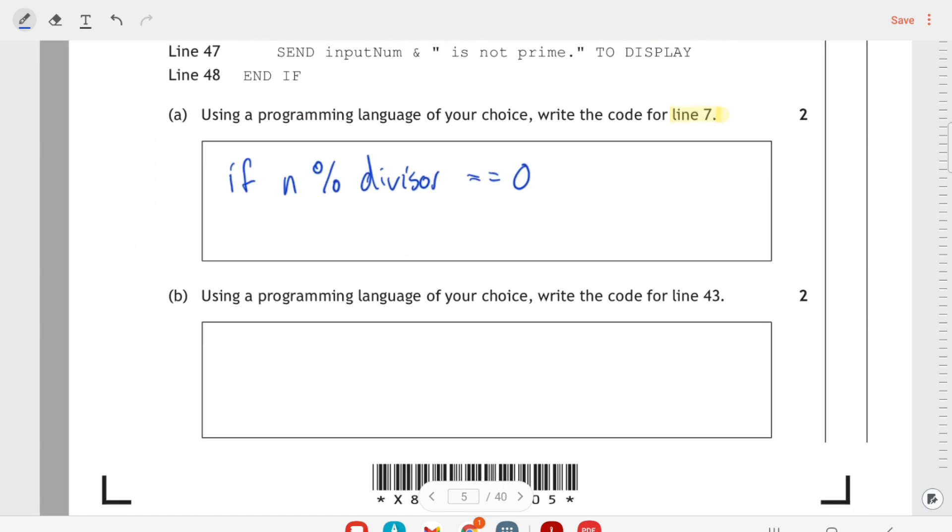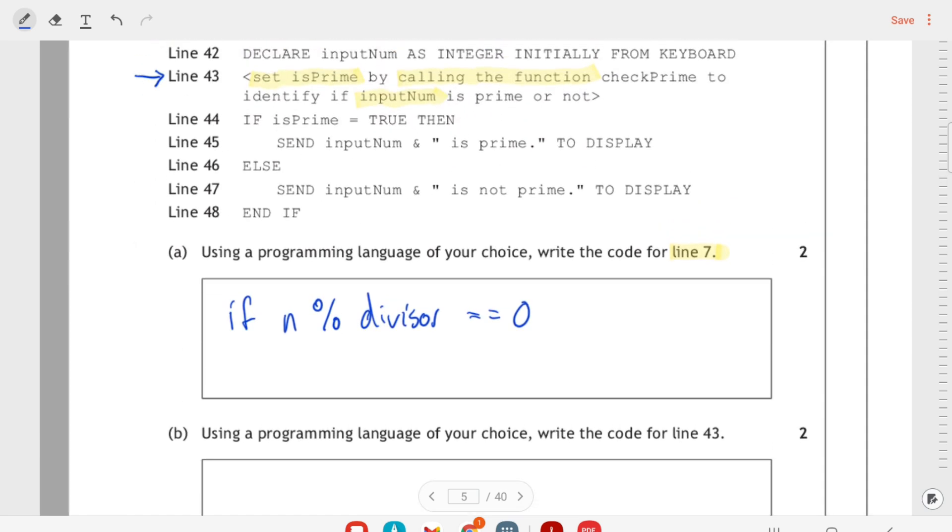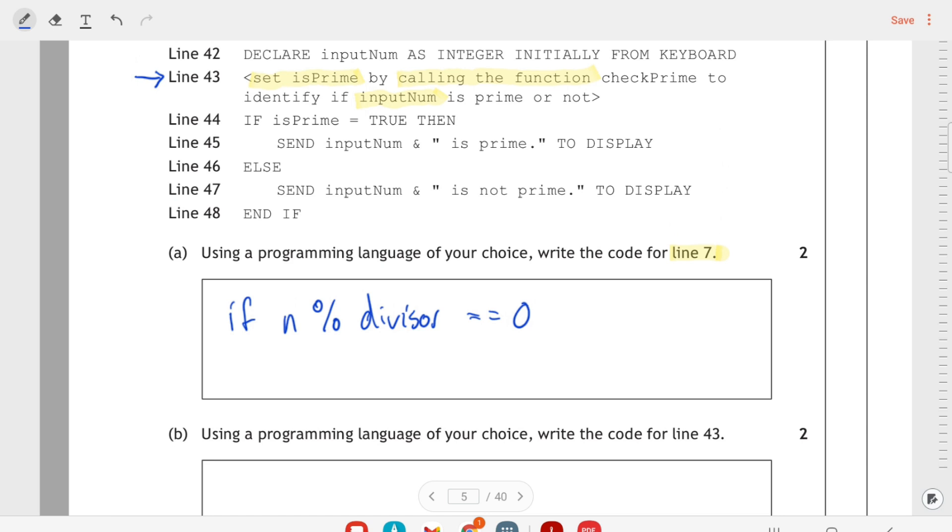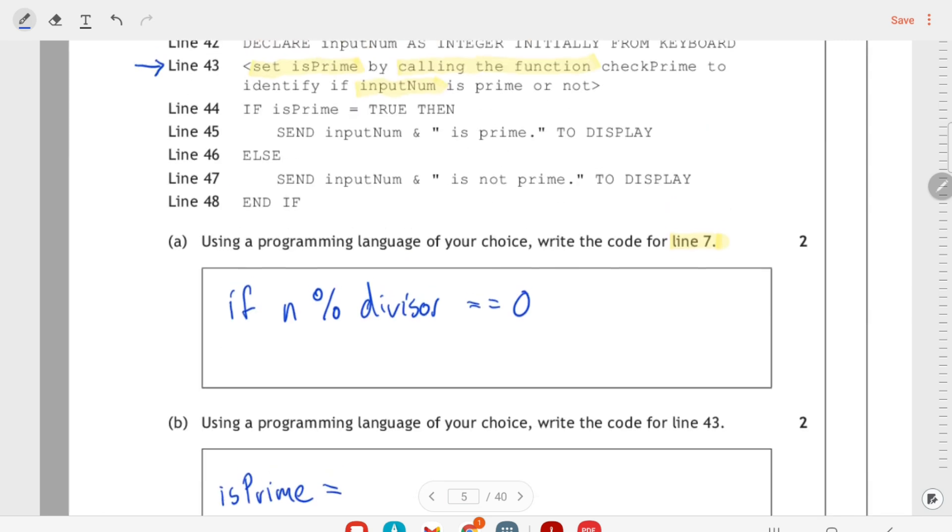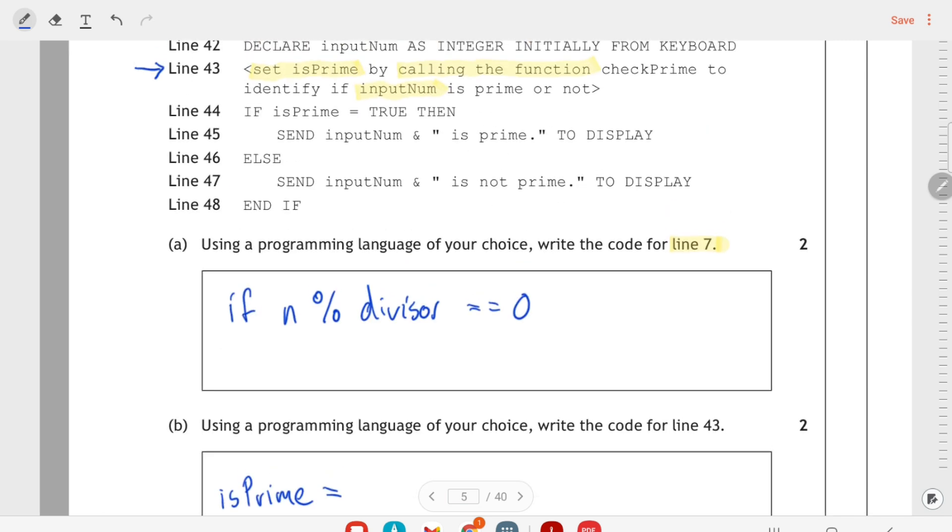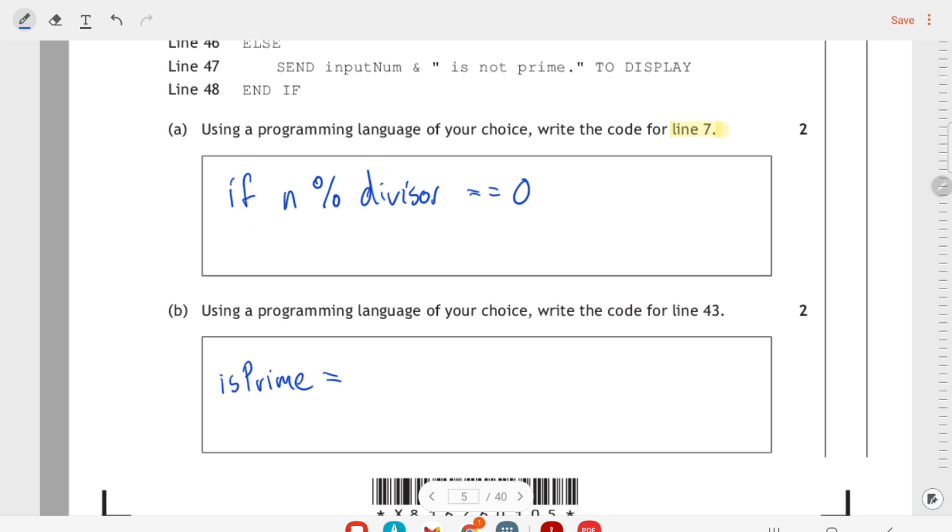Then using a programming language of your choice, we need to write the code for line 43. So line 43, it's doing three things. It's setting is_prime, so we're going to have is_prime equals, because that's what we're setting the value of. So is_prime equals, and then we have to call a function check_prime. So check_prime.